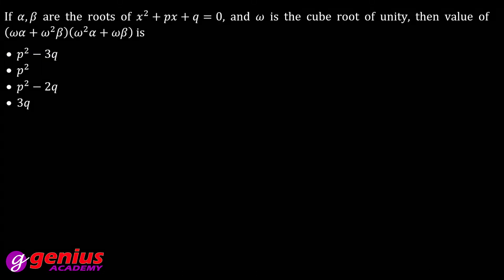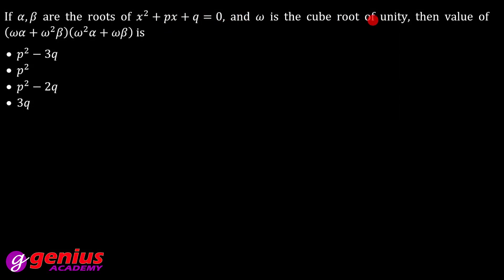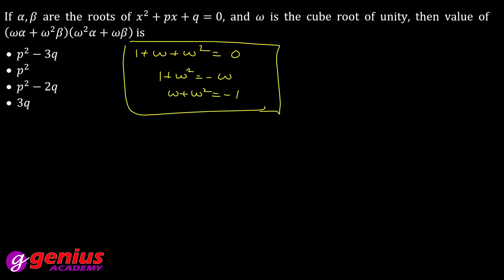Next question: if α, β are the roots of a quadratic equation and ω is the cube root of unity, find the given expression. Cube root of unity means 1 + ω + ω² = 0. So 1 + ω = −ω², and 1 + ω² = −ω, and ω + ω² = −1. According to question, α + β = −b/a and αβ = c/a (sum and product of roots).